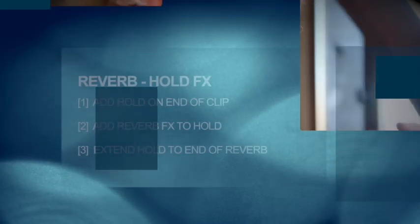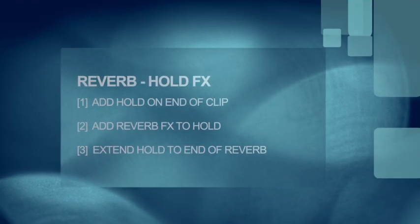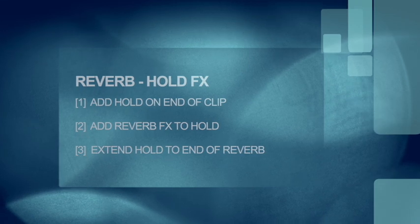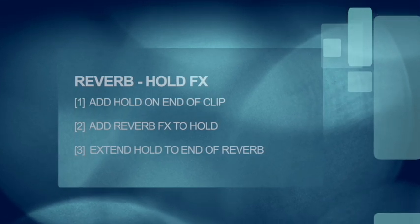So here's a quick recap: put a hold on the end of the abrupt audio edit, add a reverb effect, and drag the hold to the end of the reverb that you need. A very useful effect for all editing. If you like this tip, give me a thumbs up and tune in for more broadcast Final Cut Pro tips from me, Simon Holland.